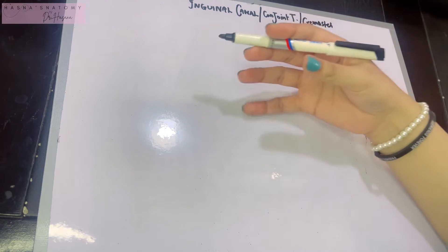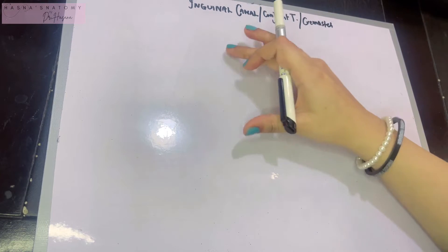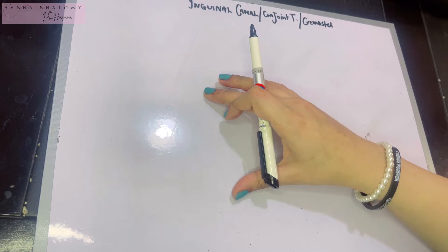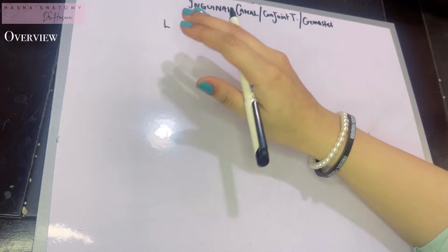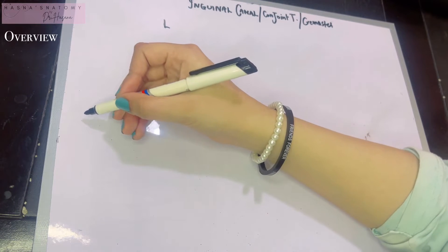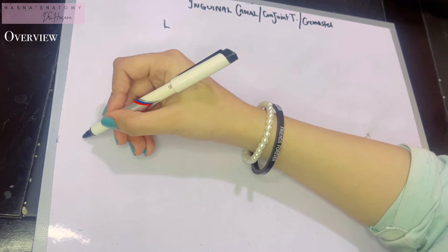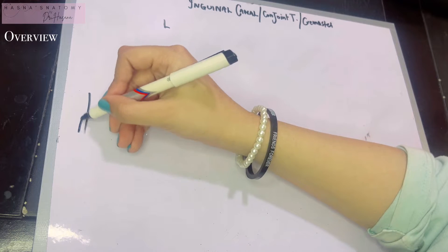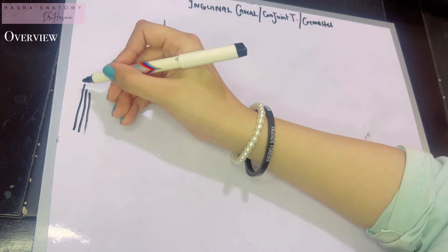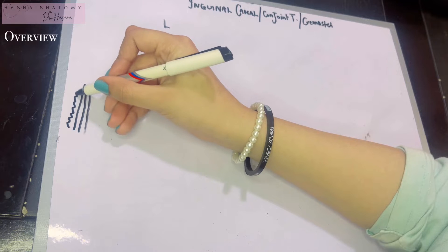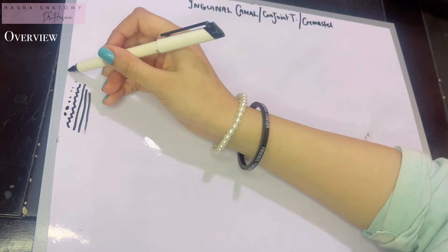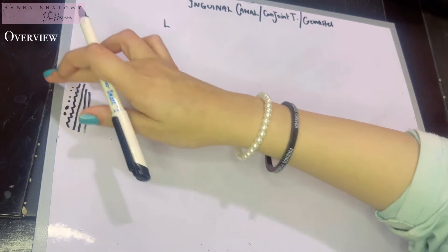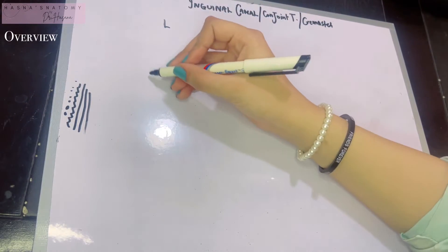Before I explain all of this, I'd like to give you a brief outlook on what exactly is happening on the lower abdominal wall. Let's talk about the left side. We all know the layers of the abdominal wall — from outside: the external oblique, then the internal oblique, the transversus abdominis, the fascia transversalis, the extra-peritoneal connective tissue, and finally the peritoneum, deep to which are all the organs.